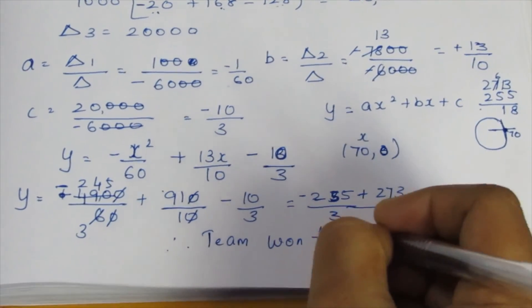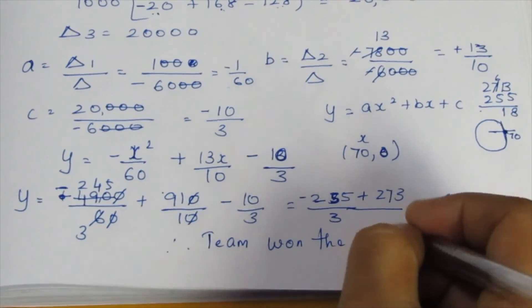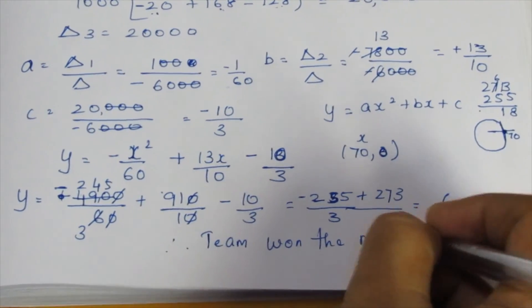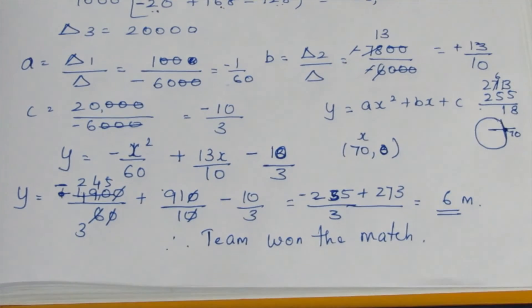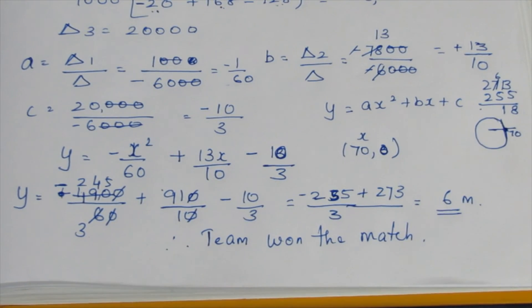So a six-meter height jump has been achieved. This is a winning match — that is the sum. Thank you.